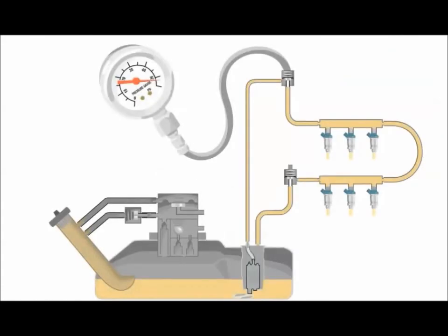High fuel pressure can be a result of a faulty regulator or a restriction in the return line after the regulator. Check the vacuum hose to the regulator first. If it is disconnected or blocked from manifold vacuum, the pressure will be high. If it's not a vacuum hose issue or the return line blocked, then the regulator needs to be replaced. If you see fuel in the vacuum line, the pressure regulator diaphragm is leaking and needs to be replaced.